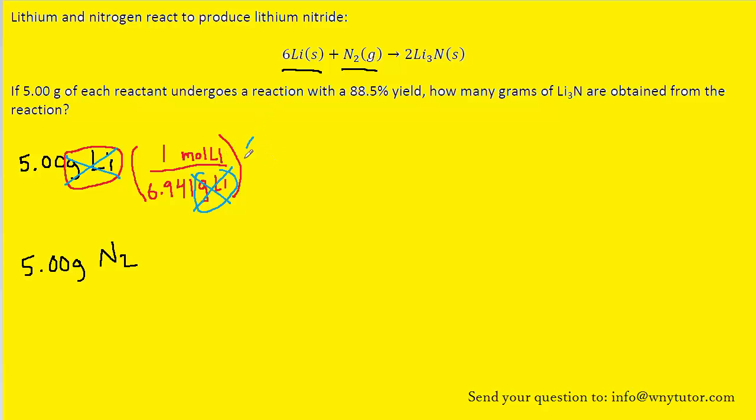Now we can relate the moles of lithium to the moles of our product, lithium nitride. According to the balanced reaction, two moles of the product are formed from six moles of lithium. We put six moles of lithium on the denominator so the moles of lithium cancel, and in the numerator we have two moles of lithium nitride.